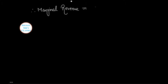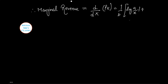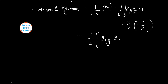Therefore marginal revenue equals d/dx of (P·x), which equals (1/B)·log(A/x) plus x times (x/A)·(−A/x²), simplifying to (1/B)·[log(A/x) minus 1]. This is our required answer.